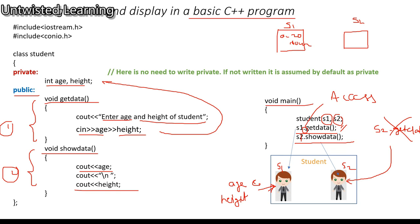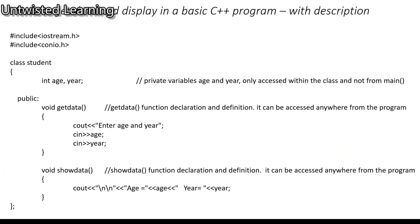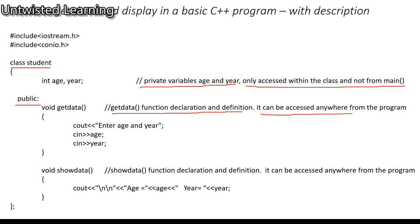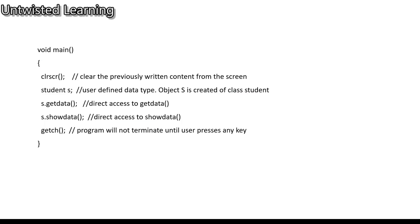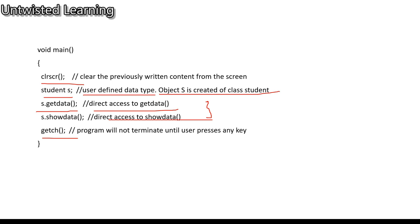To summarize with description: class student has private variables age and year, only accessible within the class and not from main. In the public section, get data function can be accessed anywhere from the program. Similarly, show data function displays values of age and year. In void main, student S is created as a user-defined data type object. S.get_data and S.show_data provide direct access to public functions. Finally, getch causes the program to wait until the user presses any key.